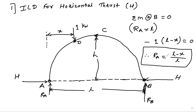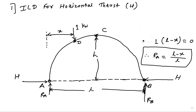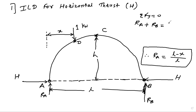Now we have to apply summation of Fy equals zero. RA plus RB is equal to 1. After simplifying, you get RB is equal to X divided by L. I think this value is already known to you; we calculated it for a simple beam.